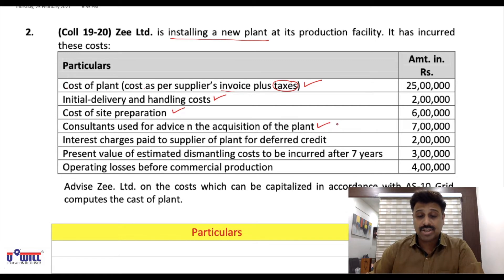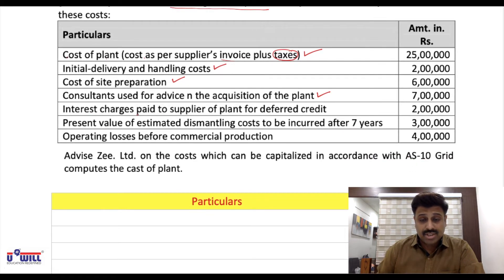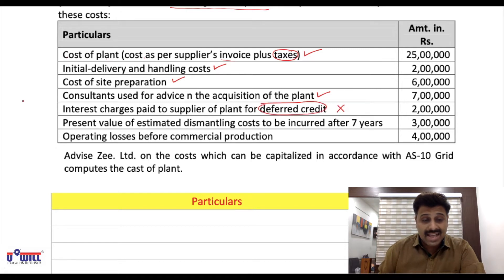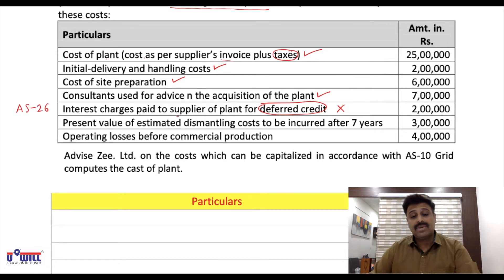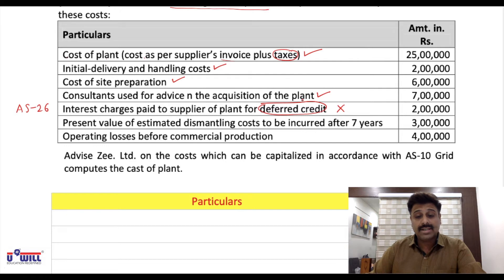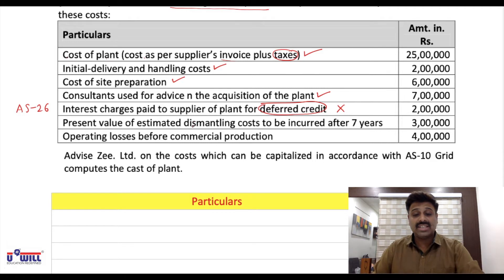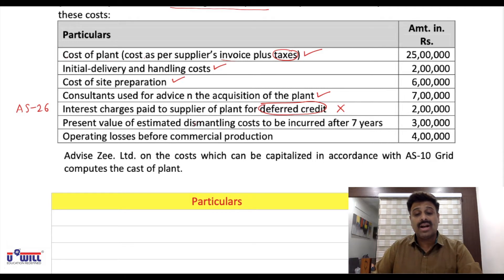Interest charges paid to the supplier for deferred credit will not be included. It is to be treated as per AS 26. If the question specifically mentions that as per AS 26 borrowing cost it is allowed to be included, then only you add it — otherwise not.